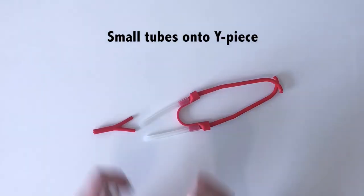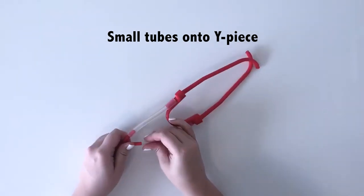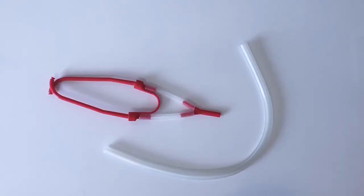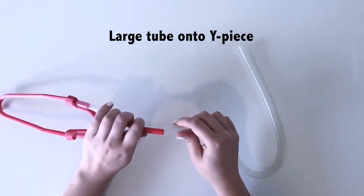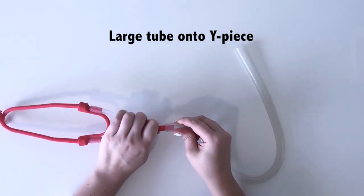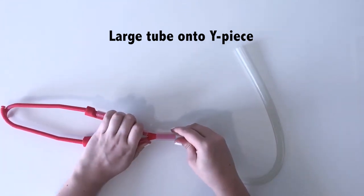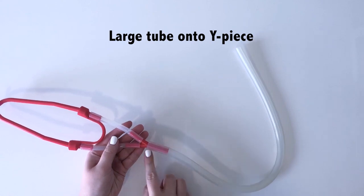Now push the small tubes onto both ends of the Y-piece. Take the large tubing and push it onto the other end of the Y-piece. This is approximately how high the tubing should be.